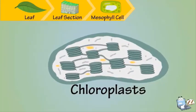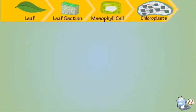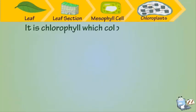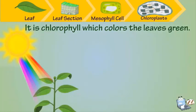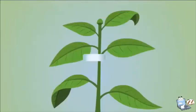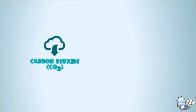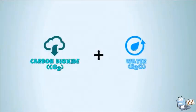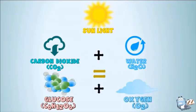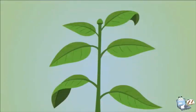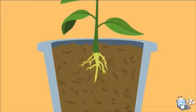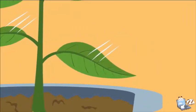Chloroplast contains a special chemical called chlorophyll. It is chlorophyll which colors the leaves green. Chlorophyll absorbs red and blue light from the sunlight that falls on leaves. Carbon dioxide plus water plus sun gives you glucose plus oxygen. The glucose, or sugar, is the food which the plant has made for itself and is distributed to all parts of the body. And oxygen is a waste gas which the plants breathe out.